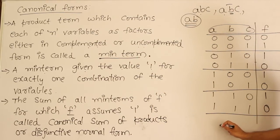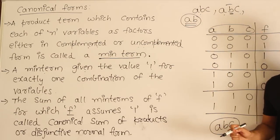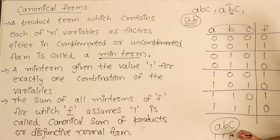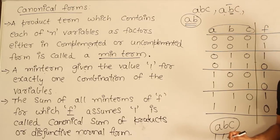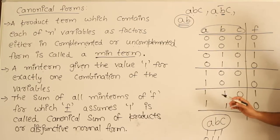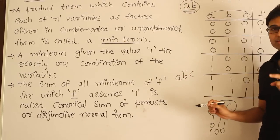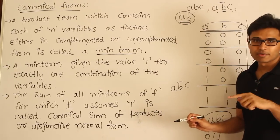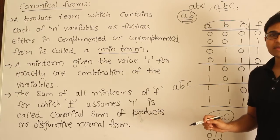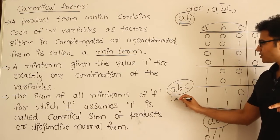For example, the minterm A·B·C will be 1 only when A=1, B=1, C=1. If you assign any other value, the output will be 0 — for example 0,1,1 gives 0, or 1,0,0 gives 0. Similarly, the minterm A·B'·C will be 1 only for a single combination of inputs, and 0 for all other combinations.